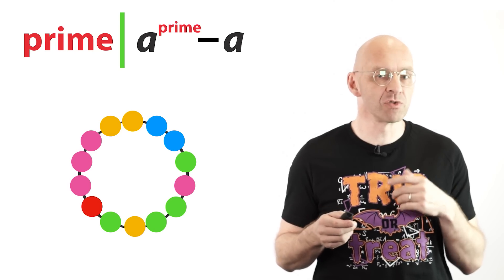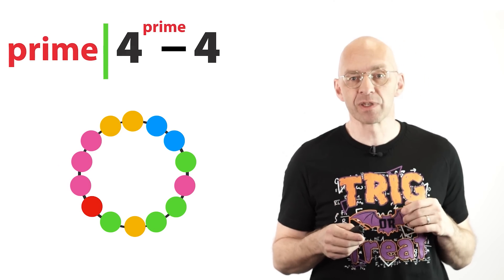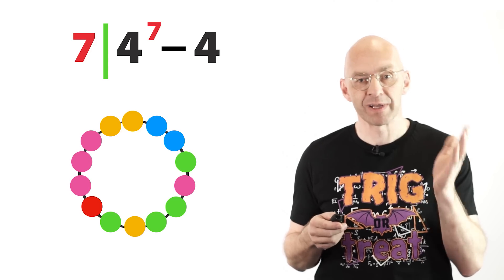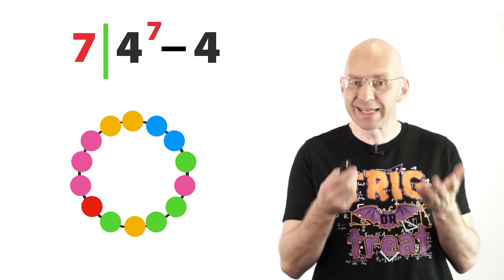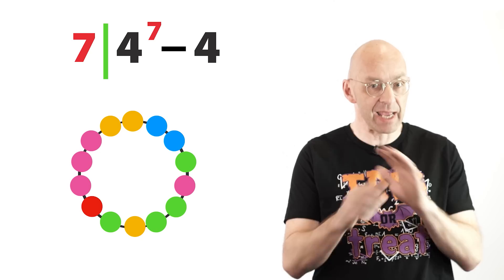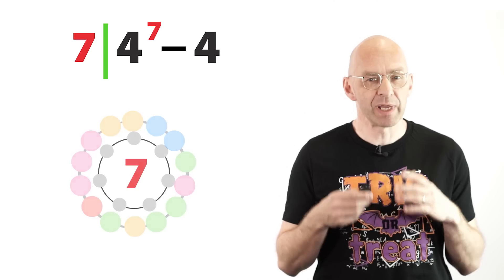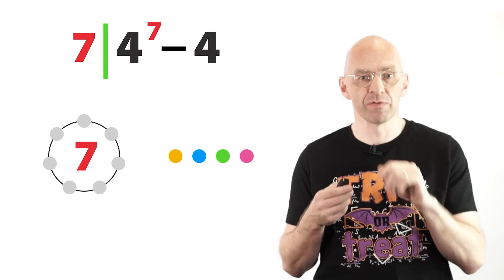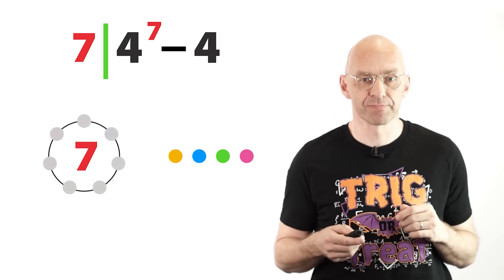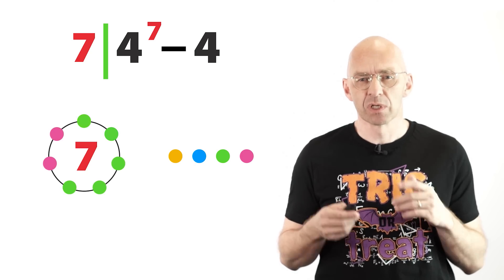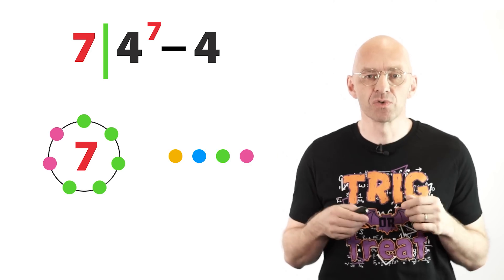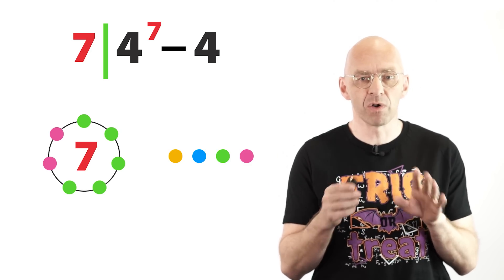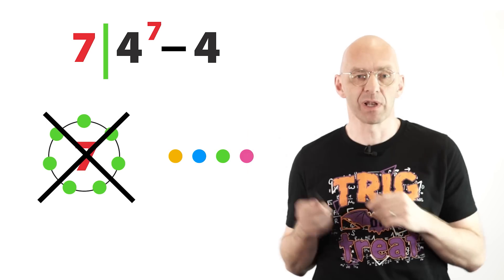So let's again choose the integer to be 4 and let's prove that the prime 7 divides 4 to the power of 7 minus 4 in a way that will also clearly work for any prime and any positive integer. Now what we're going to do is to count the number of necklaces of length 7 where each of the seven beads can be one of four colors. Except not all of the beads can be the same color. Here's an example. And here's another one. So it's okay to not use all the colors. The only thing we avoid is choosing all the beads to be of one color. So that's not allowed.